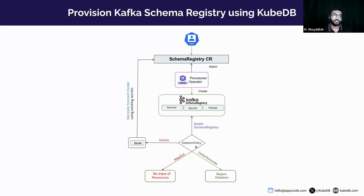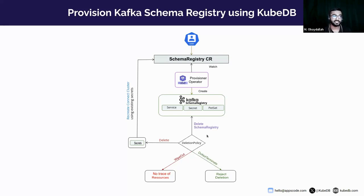If you set deletion policy to 'wipe out', when you delete the schema registry CR, it will delete everything it had created earlier. The last option is 'do not terminate'. If you set this, you cannot delete the schema registry CR — you must first change the policy to 'delete' or 'wipe out' before deleting the custom resource.